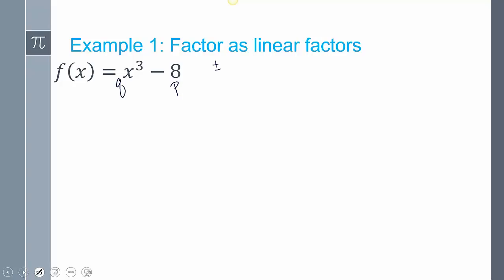So I'm going to get plus or minus p over q. So 1, 2, 4, and 8 over 1. That's plus or minus 1, plus or minus 2, plus or minus 4, and plus or minus 8.